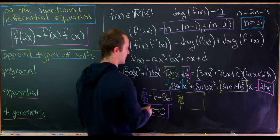Now let's explore exponential solutions. Assume f(x) = c·e^(kx) with c and k real. Then f(2x) = c·e^(2kx), f'(x) = ck·e^(kx), and f''(x) = ck²·e^(kx). Substituting into the equation, and since exponentials are never zero we can divide through by e^(kx).